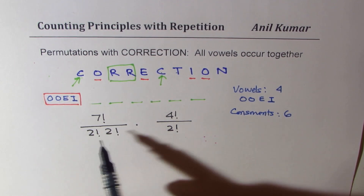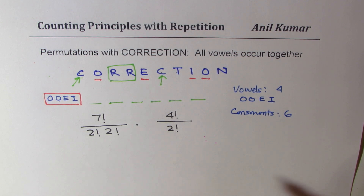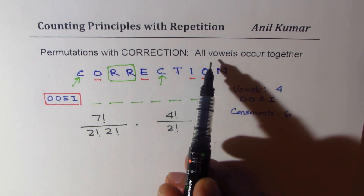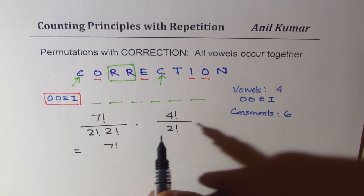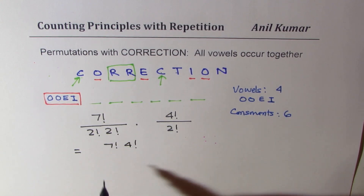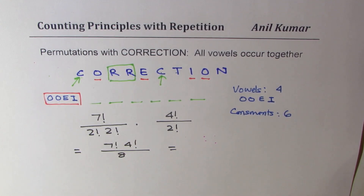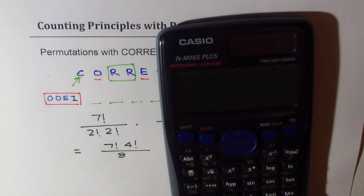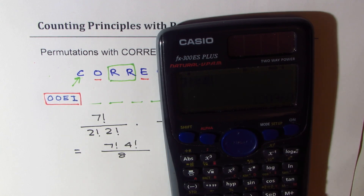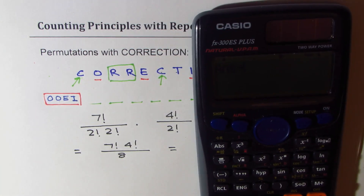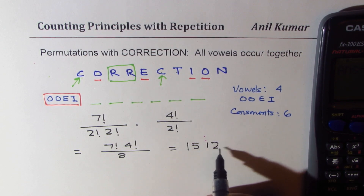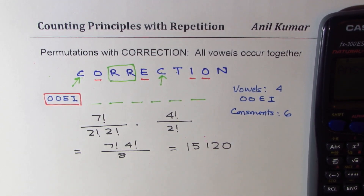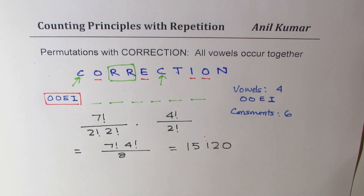So the solution for all vowels occurring together is 7 factorial times 4 factorial, divided by 8 (that is 2 factorial times 2 factorial times 2 factorial). Using a calculator, 7 factorial times 4 factorial divided by 8 gives us 15,120. That becomes the answer for all vowels occurring together.